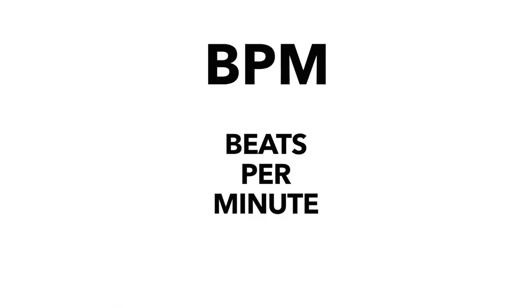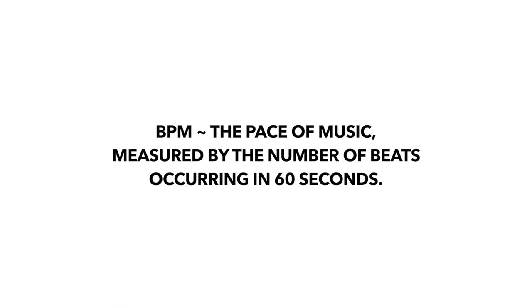The next element of theory we will cover is BPM, which stands for beats per minute. The BPM refers to the pace of music measured by the number of beats occurring in 60 seconds, and can also be referred to as the song tempo. Typical dance music genres fall into designated speed groups — house music tends to fall between 120 and 130 BPM, with the most typical speeds being 126 and 128. Here is an example of a track at 128 BPM.